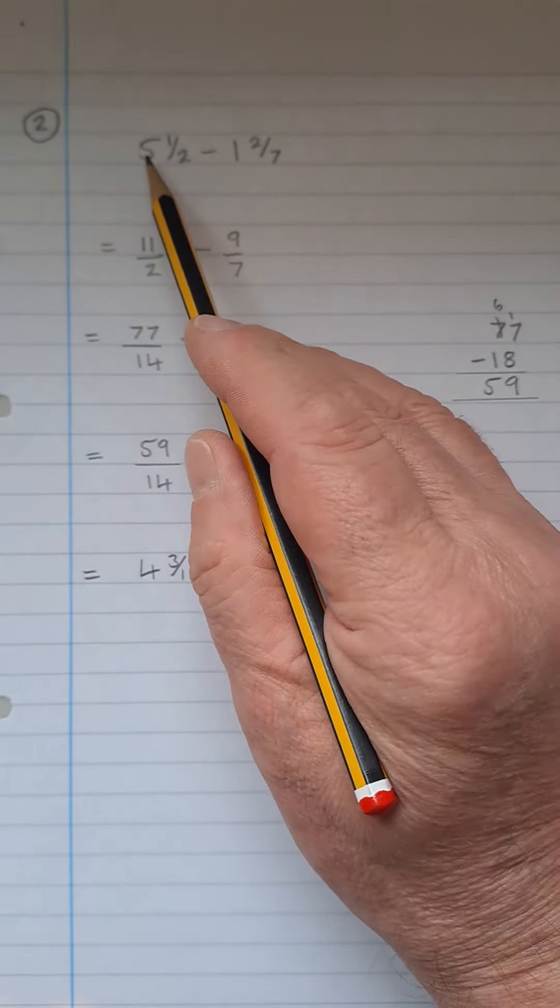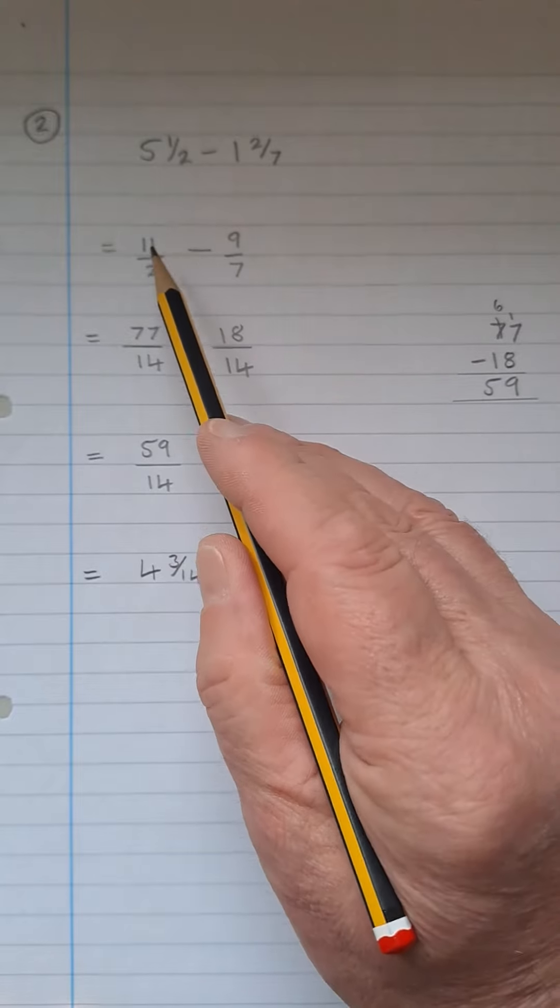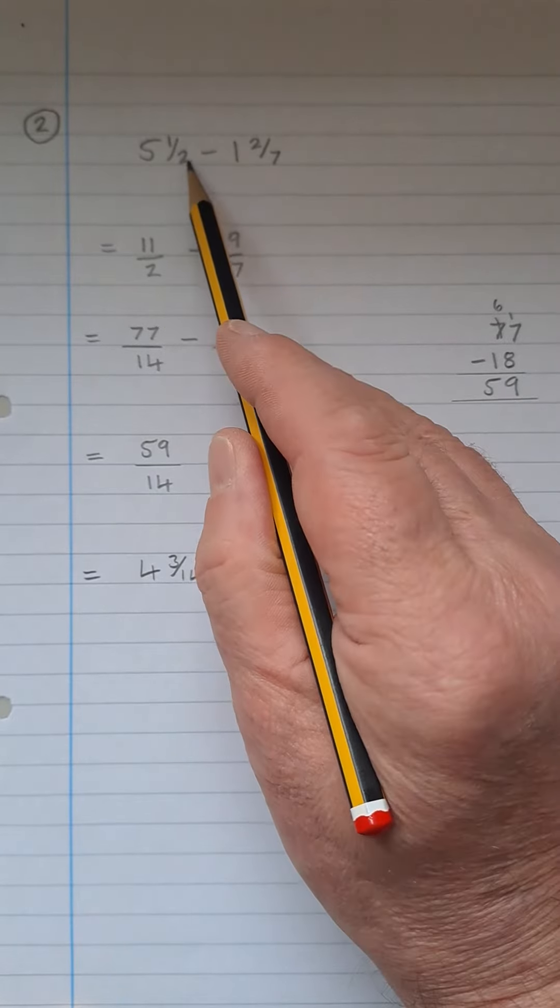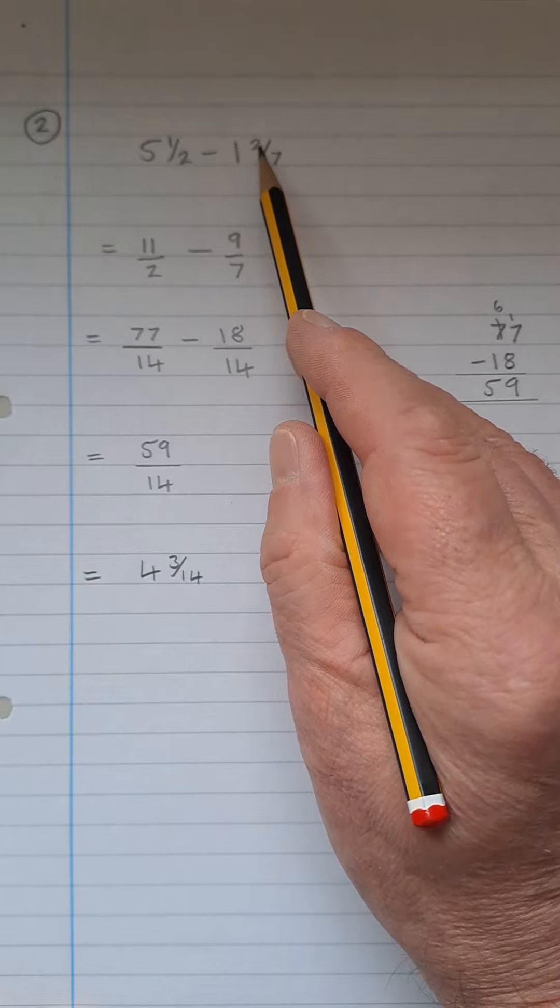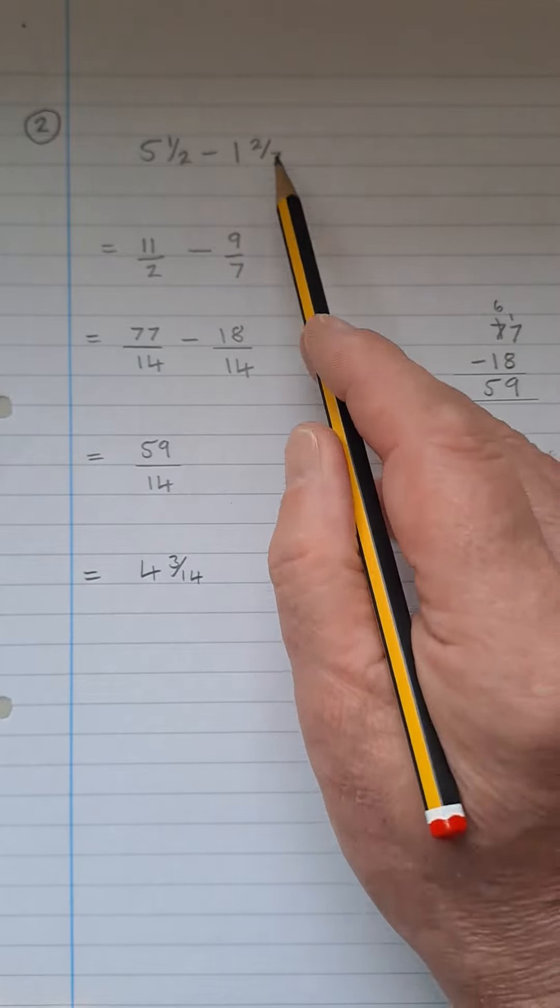5 and 1/2 is 2 times 5 is 10, add 1 is 11, 11 over 2 there. Take away, 7 times 1 is 7 and 2 is 9, that gives you 9 over 7.